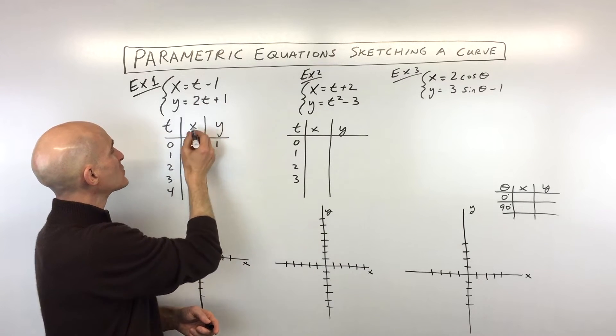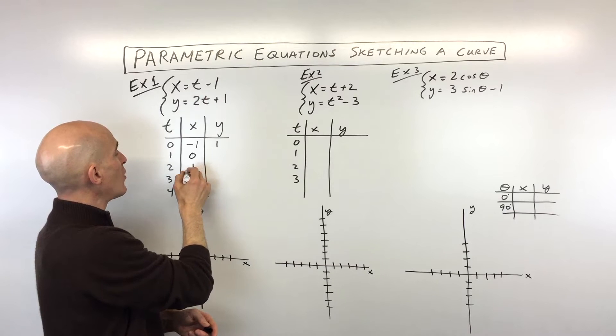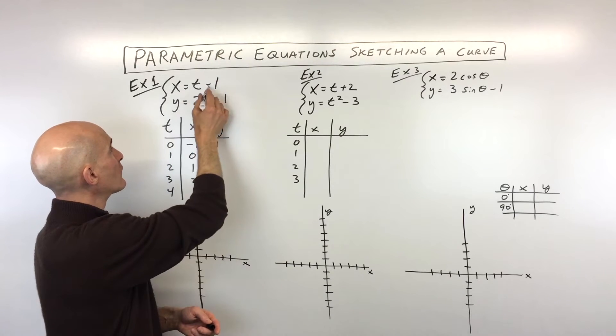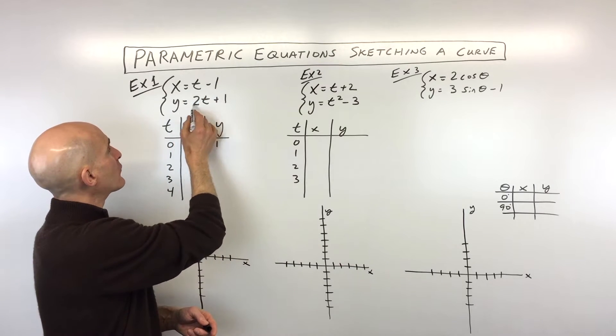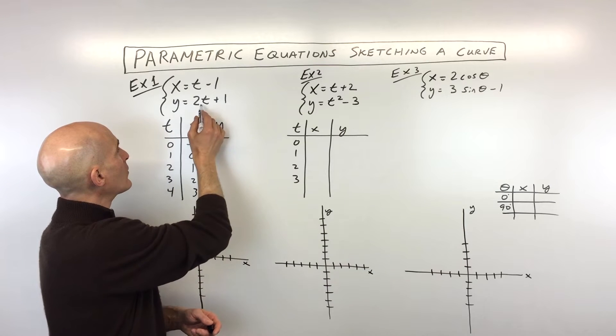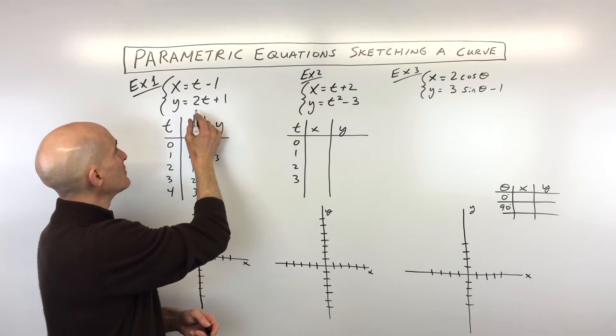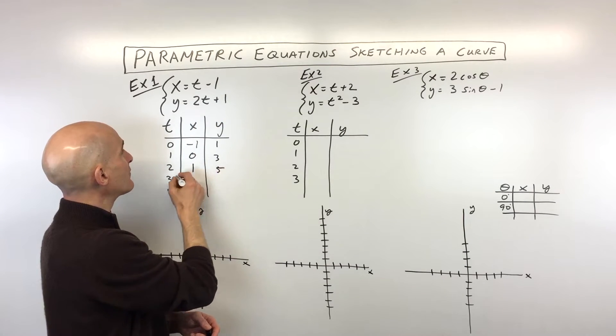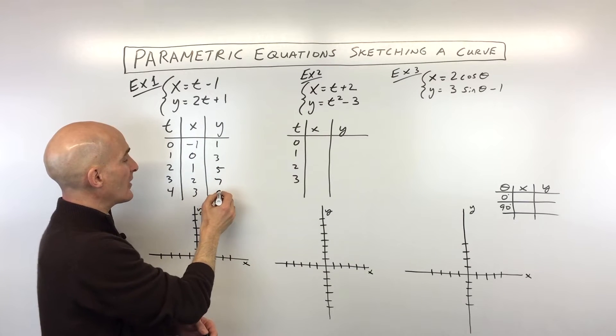And if we put one in, one minus one is zero. Let's see, two minus one is one, three minus one is two, and four minus one is three. And then for y, if we put in one, we're getting two plus one is three, two times two is four plus one is five, two times three is six plus one is seven, and nine.